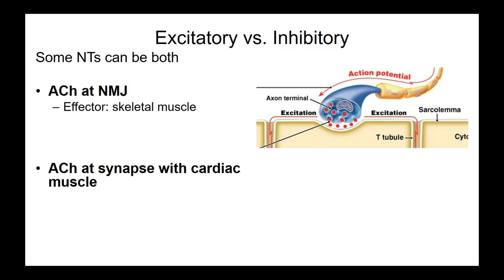With skeletal muscle contraction, acetylcholine gets released from the motor neuron and docks with the acetylcholine receptor on the skeletal muscle. That receptor is excitatory — it's a ligand-gated sodium ion channel. When acetylcholine binds, it opens the channel, allows sodium in, causing depolarization, an action potential, and then muscle contraction. At the neuromuscular junction, acetylcholine is excitatory and opens sodium channels.